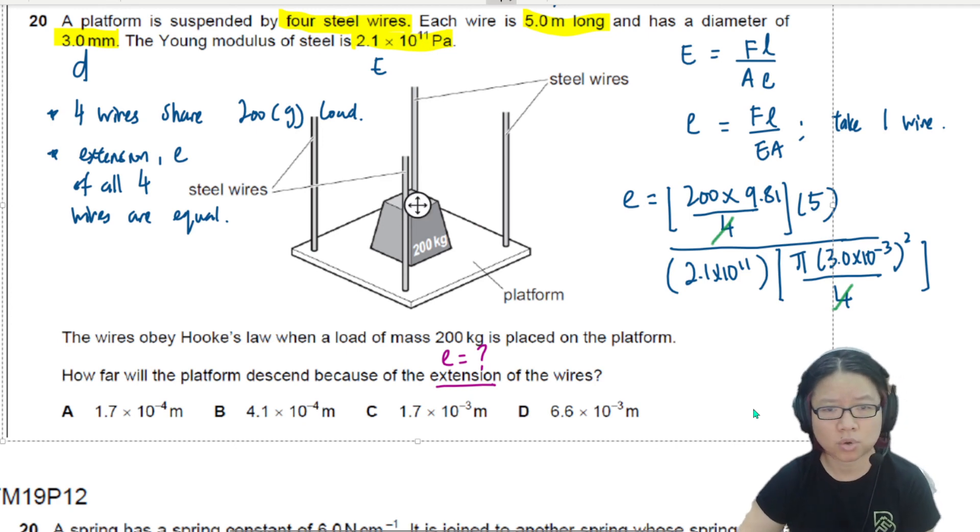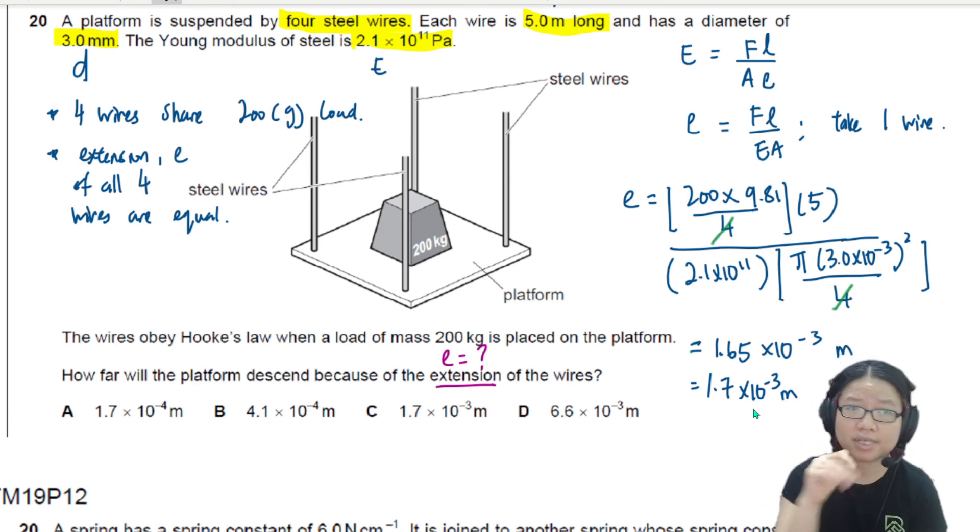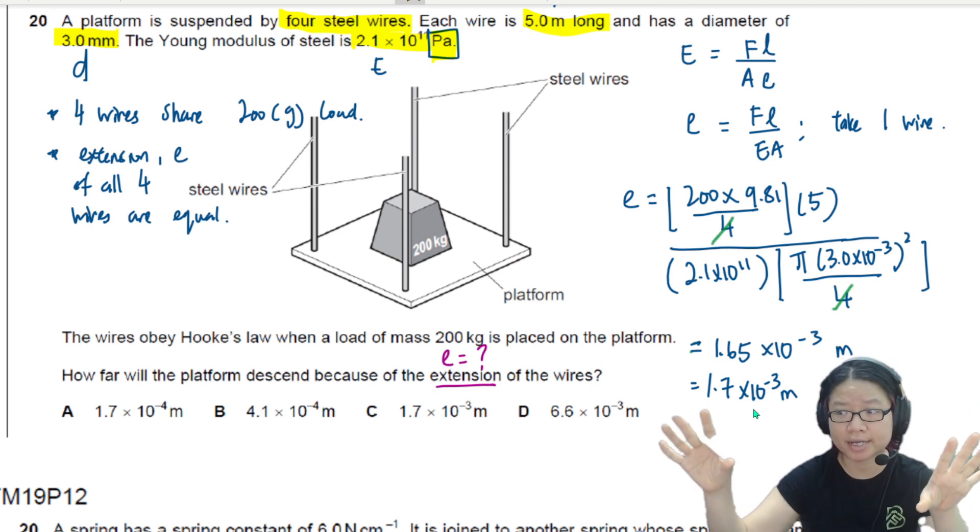I'll write that down. 1.65 times 10 to the power of negative 3, which is 1.7 times 10 to the power of negative 3 meter. If we think about it in 2SF. So all the units here have to be SI because the Young modulus is in Pascal and Pascal is in SI. So all the units when you use the Young modulus equation have to be SI. Unless there's a way that you can left-hand side and right-hand side cancel unit. If you're not sure, always convert. So the answer here is C.